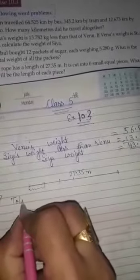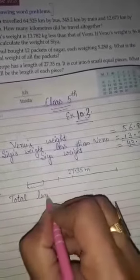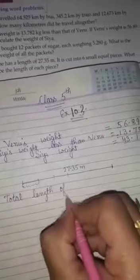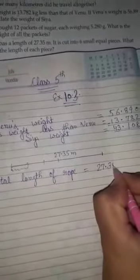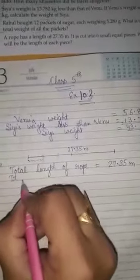Write: total length of rope is equal to 27.35 meters. It is cut into six equal pieces.